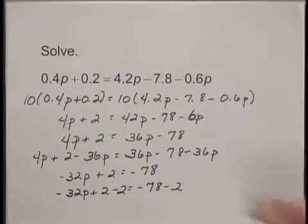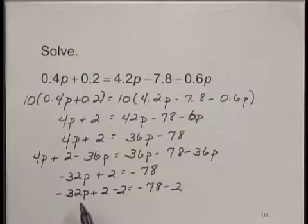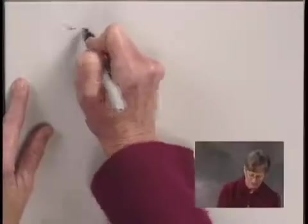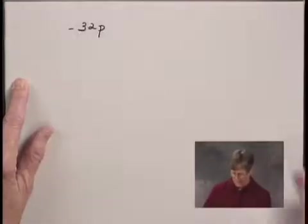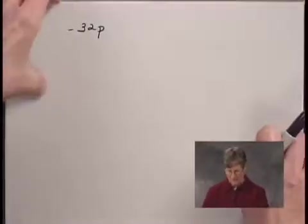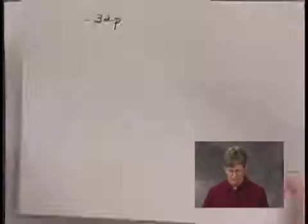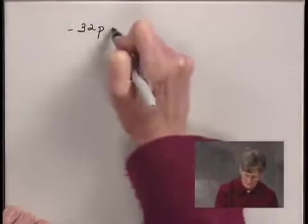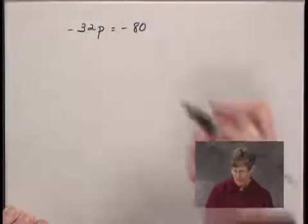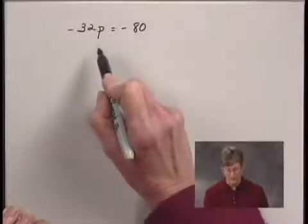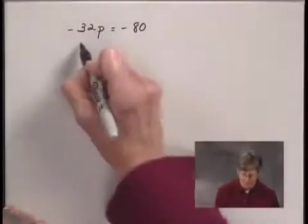Let's go to a new sheet of paper. On the left hand side, I have negative 32p plus 2 minus 2. 2 minus 2 is 0, so I just have negative 32p on the left hand side. And on the right hand side, we had negative 78 minus 2, which gives me negative 80. So negative 32p is equal to negative 80. Now I want to get p alone on the left hand side and I can do that by dividing both sides by negative 32.